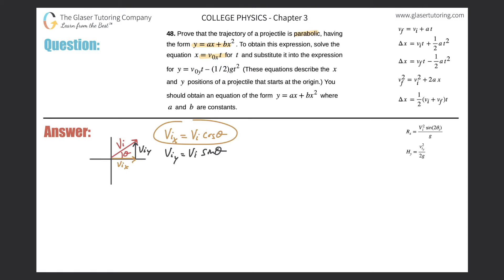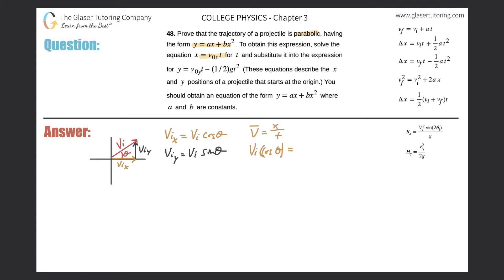In the x frame of the problem, acceleration is always zero — it's a projectile motion, there are no accelerations in the x frame. Therefore, since there is no acceleration, all the velocities in the x frame are constant. So the average velocity is the same as the initial velocity in the x frame. The average velocity is the x displacement over time.